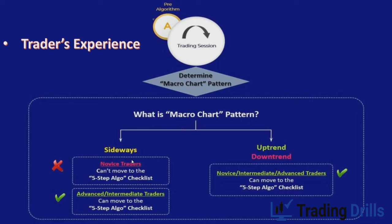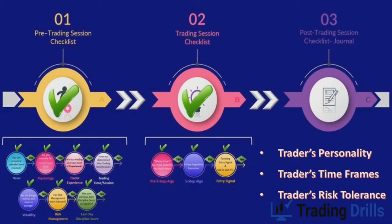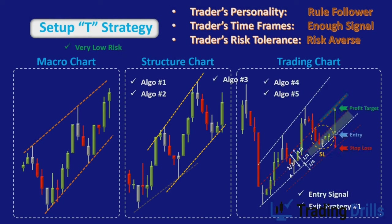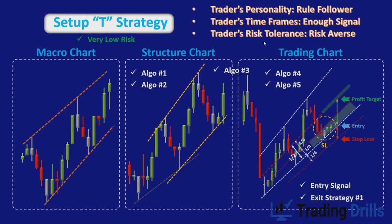These are considered very low-risk areas because the macro and structural charts are aligned and price is away from static and dynamic macro support and resistance. Regarding the four personal factors: trader experience matters — novice traders cannot trade high-risk areas when the macro is sideways or against the trend; only advanced traders can trade all six scenarios. Trader personality is also important — Setup T does not form very frequently, so the trader must be patient and rule-following, with a timeframe that provides enough signals without triggering overtrading.